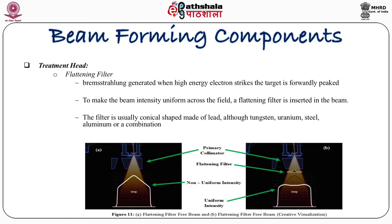For treatment purposes, we want a uniform dose on a particular surface or at different depths on the patient surface. But the output contains a peak in the center. We want to flatten it — that is why a flattening filter is used, which absorbs the most probable energies and makes the beam flat. This flattening filter is introduced in the treatment head.